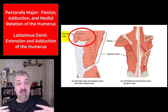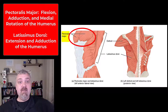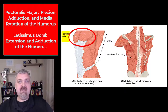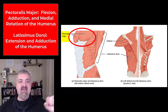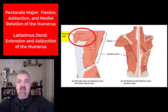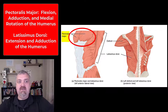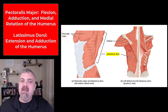Pectoralis major means it's the largest muscle in the pectoral region. Think about doing a push-up. Its job is flexion — forward flexion — adduction, and then medial or internal rotation. So in that push-up position, your pectoralis major has done all of those actions.